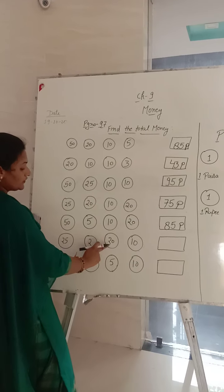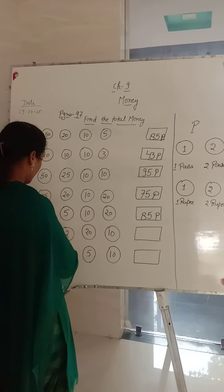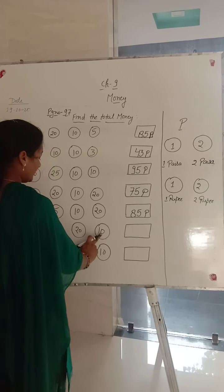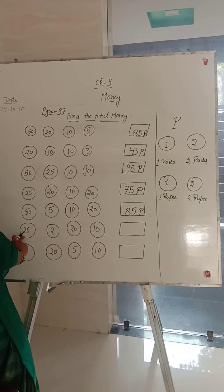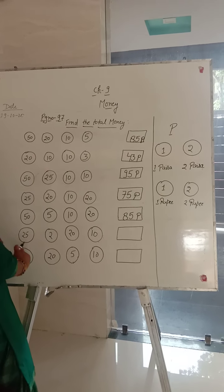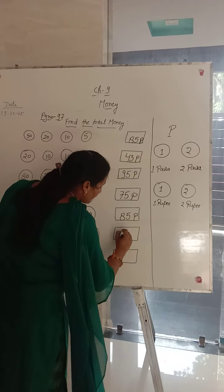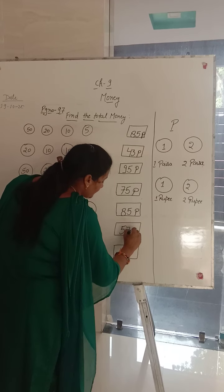Next is 25, 20, 10. Kitna hoi hii total? 20, 30, 40, 50, 55 plus 2 — 57 paisa.